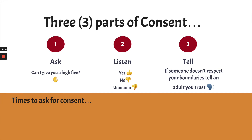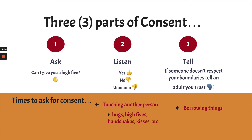Times to ask for consent or permission are anytime you're going to touch another person — a hug, a high five, a handshake, a kiss with a family member. Anytime you're going to touch another person, you need to ask permission. You also need to ask permission to borrow something, and to ask if you're going to share something, like 'Would you like to use my colored pencils?' If you don't ask, you have to assume the answer is no.